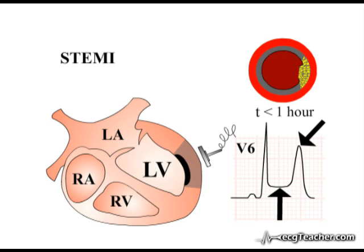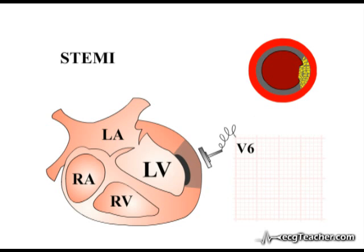Peaked T waves, ST segment elevation and alterations to the terminal portion of the QRS complex are the early changes of acute myocardial infarction secondary to complete occlusion of a coronary arterial vessel. If these early ECG changes are recognized and the vessel reopened using either thrombolysis or direct coronary angioplasty, the progression of the infarction can be halted and myocardium at risk of death salvaged. If left untreated, the full thickness of the region of myocardium supplied by the occluded vessel may die.